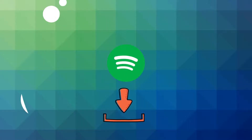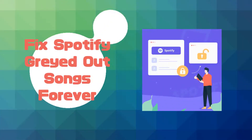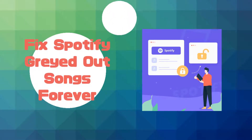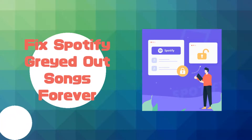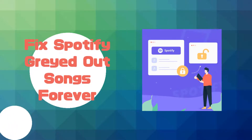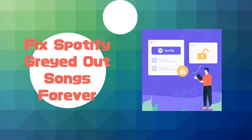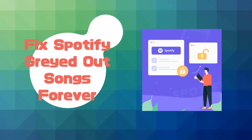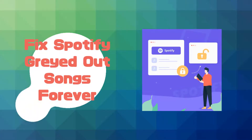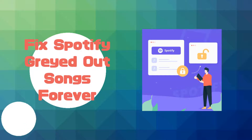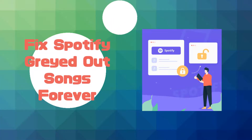If you download Spotify songs to your device as local files, even after those songs are no longer available on Spotify, you can still listen to them locally. So the best solution for fixing grayed out Spotify songs is to download them in advance.